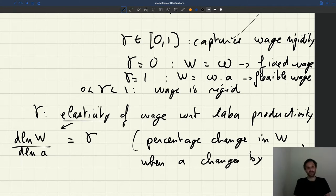So if you have an elasticity of 1, it means that if the productivity changes by 1 percent, the wage will change by 1 percent. That's what happens when you have flexible wages here. If you have an elasticity of 0, it means that if your productivity changes by 1 percent, the wage will not change at all. That's what happens if you have fixed wages here.